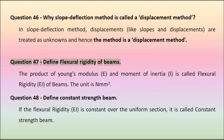Question 47: Define flexural rigidity of beams. The product of Young's modulus (E) and moment of inertia (I) is called flexural rigidity (EI) of beams. The unit is N·mm².